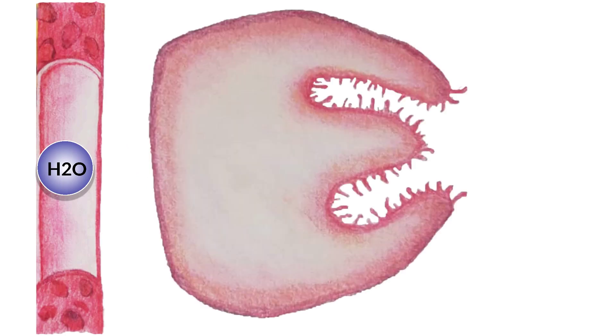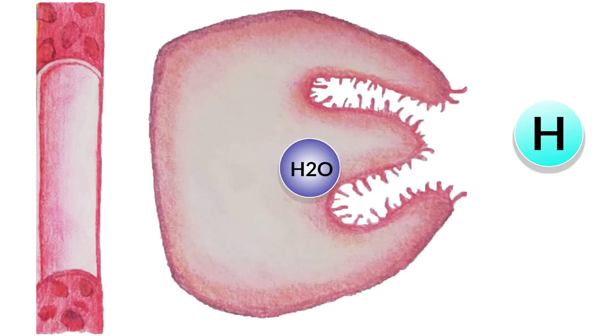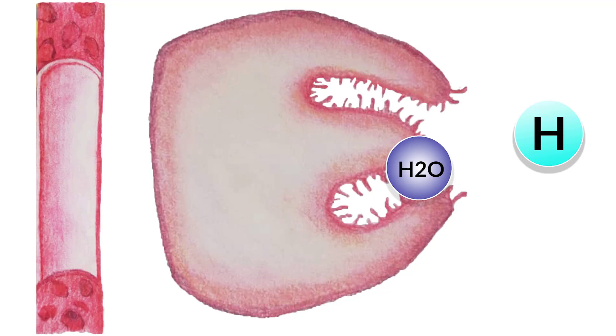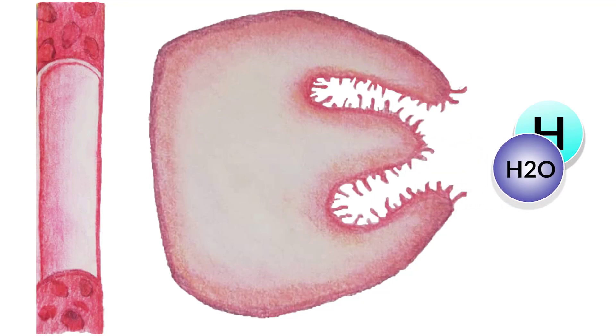Step four, the final step: water moves from the blood vessel into the luminal site due to the osmotic gradient created by the highly osmotically active hydrogen ions.